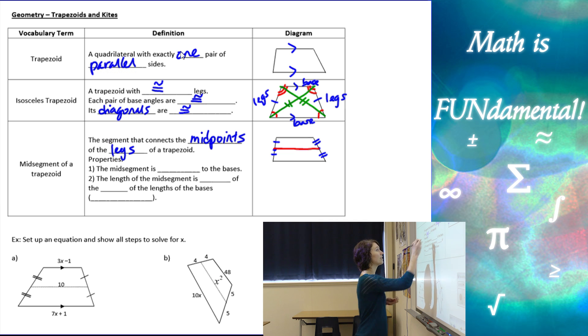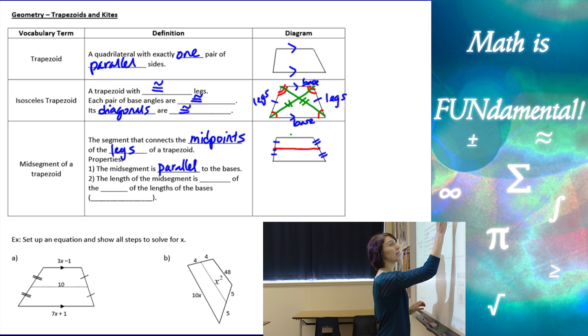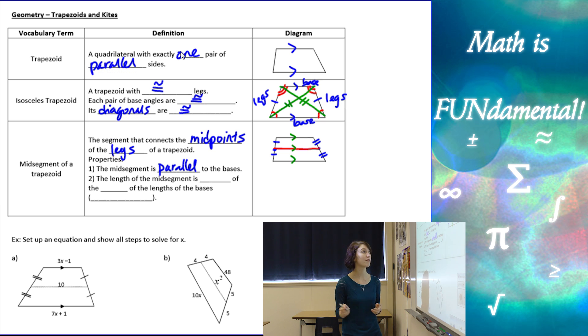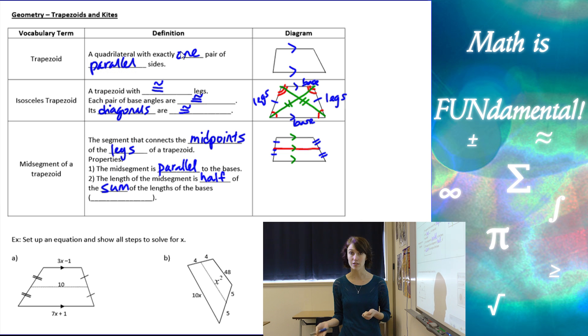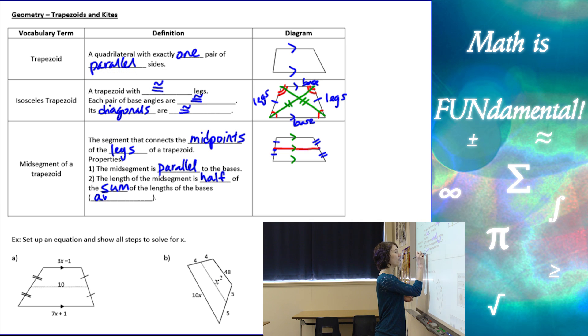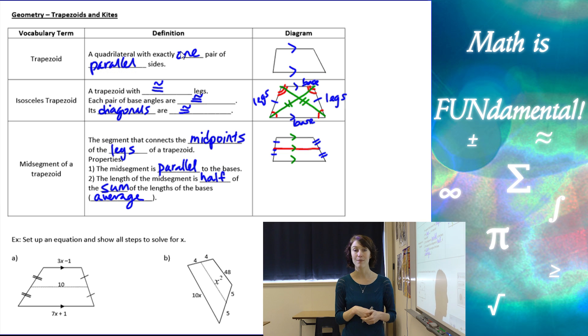So our two properties is that the mid-segment has to be parallel to our bases, so all three of these sides have to be parallel to each other, and the length of the mid-segment is half of the sum of the lengths of the bases. Remember, unlike a triangle, which had only one base, here we have two bases in the trapezoid, so we have to take the average of those two bases to get the length of our mid-segment.